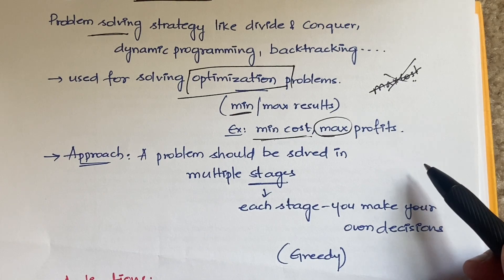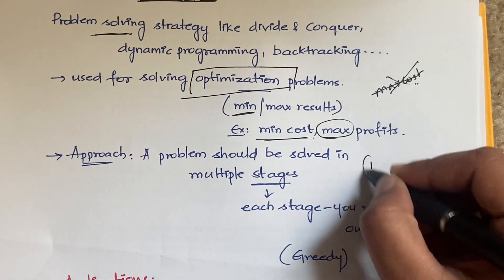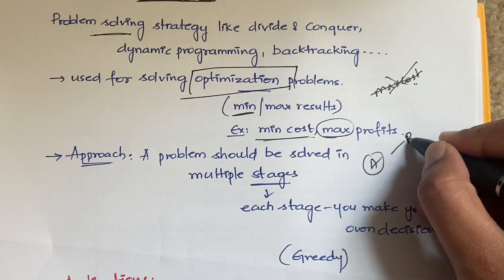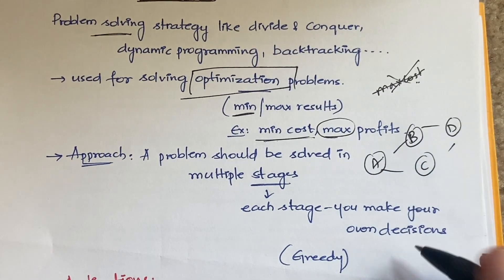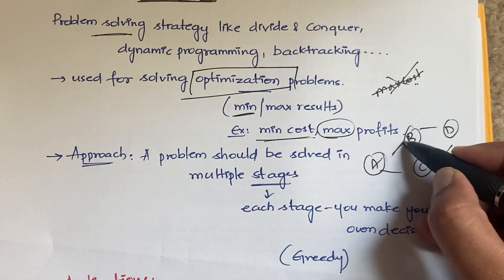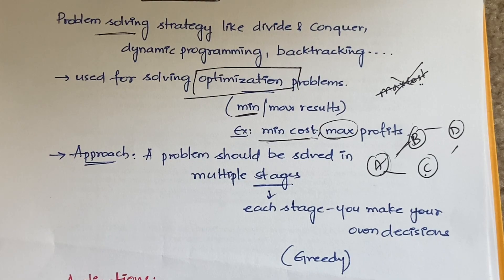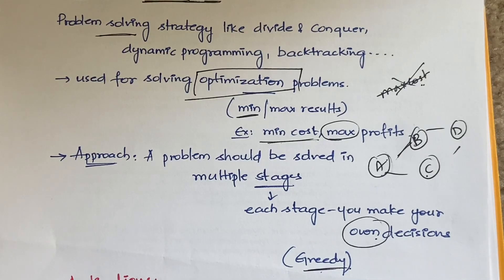A problem should be solved in multiple stages. For example, from point A you may go to point B or point C, then on to point D — you have to make decisions at each and every stage depending on some parameters. For different algorithms you'll have different parameters: some consider cost, some consider distance, some consider profit, and some consider time. You make decisions at each and every stage — that is why it is called a greedy approach.